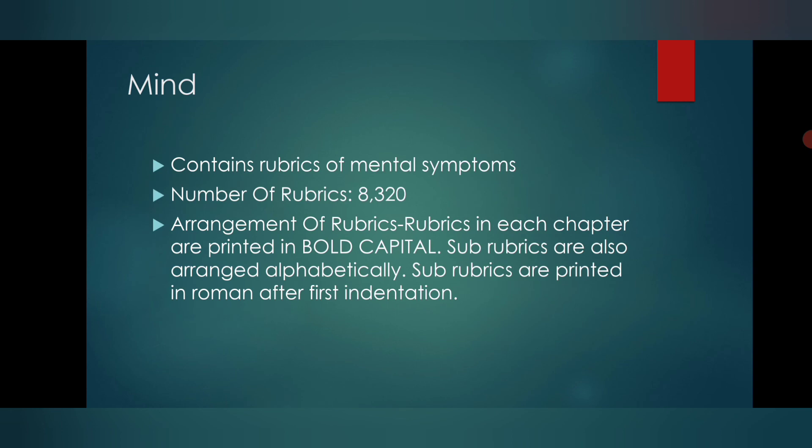The first chapter of mind contains different rubrics of mental symptoms and mental conditions, and a total of 8320 rubrics are included in that chapter.